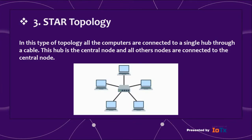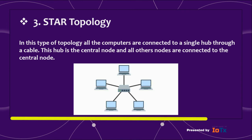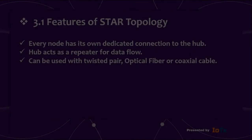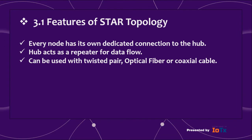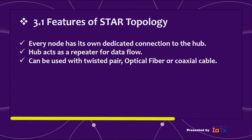Number three: star topology. In this type of topology, all the computers are connected to a single hub through a cable. This hub is the central node, and all other nodes are connected to the central node. Features: every node has its own dedicated connection to the hub; the hub acts as a repeater for data flow; and it can be used with twisted pair, optical fiber, or coaxial cable.